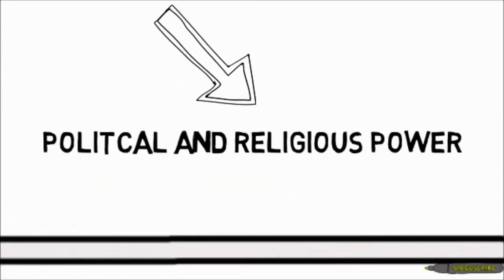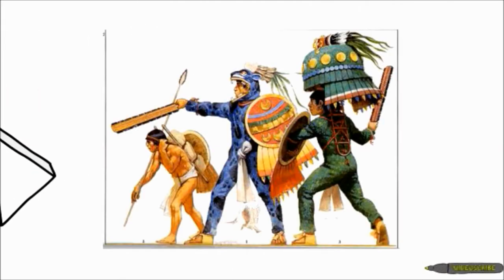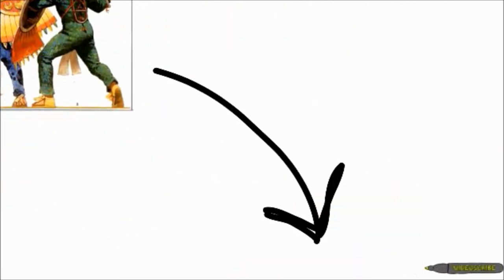Society was also run similarly by the political and religious powers. Aztec civilizations thrived off wars and conquering other people. Rulers and priests were revered as gods, had monuments dedicated to them, and controlled tribute systems of conquered people.